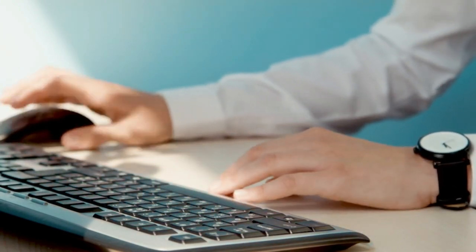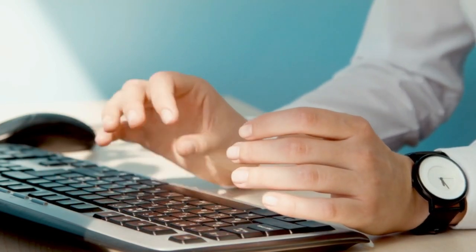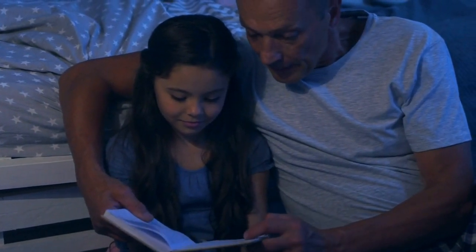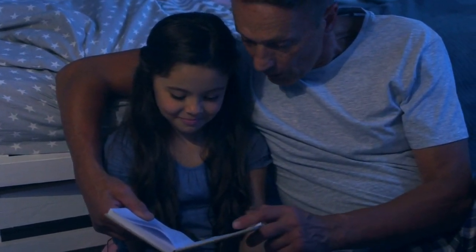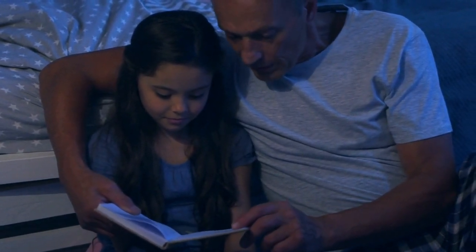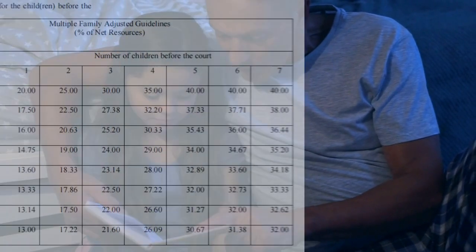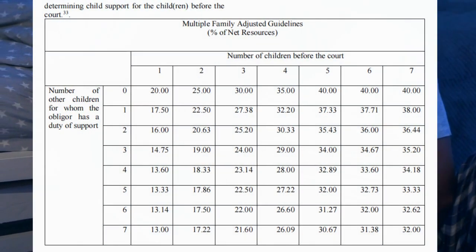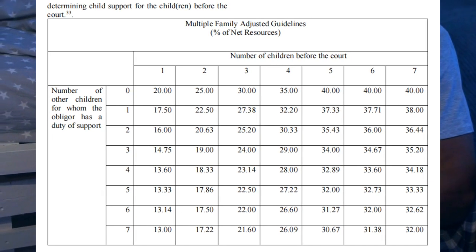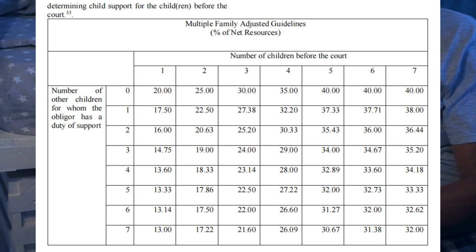If you have a second child before the court, you go up five percentage points to 25 percent. A third child is 30 percent, and so on until you reach 50 percent. The courts do not allow more than 50 percent of your wages to be withheld, so while you may still have an obligation to pay, they will not withhold more than 50 percent.